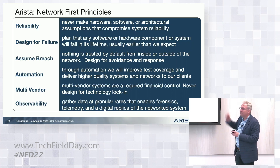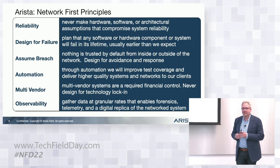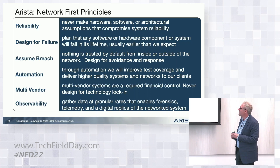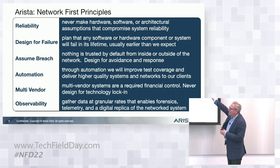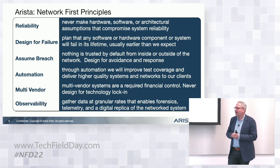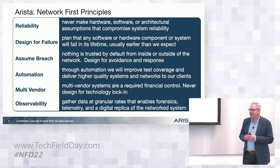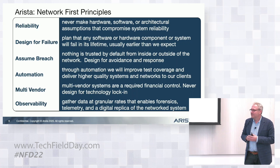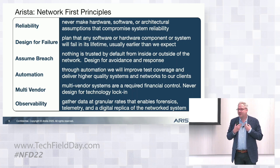Expect that things will fail. Assume things will get breached — we've seen this more and more in recent times, and the number of exploits is increasing dramatically. Design for automation, design for multi-vendor. We saw that in a very clear use case with the joint project with Facebook. We see it with people adopting multi-cloud — the right scale number was about 84% of enterprises polled are in four or more clouds. We see it with our own supply chains: we always try to have two vendors for every critical component, and our network should be the same way.